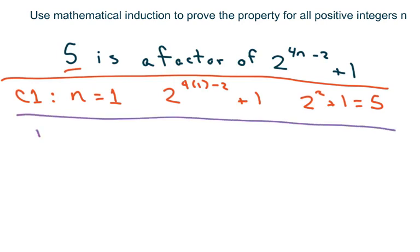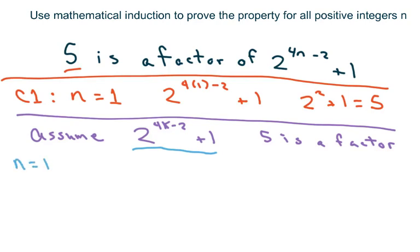Now we're going to assume that 5 is a factor of 2 to the 4k minus 2 plus 1. So assume that 5 is a factor. That means when we do k plus 1, we want to get it back looking like this. So we're going to try n is k plus 1.